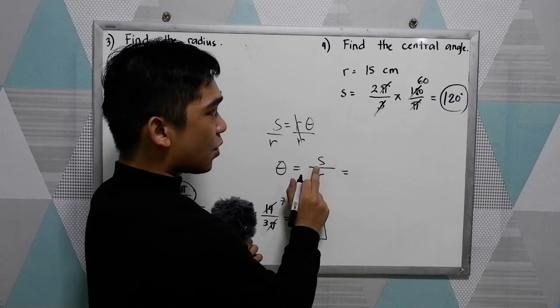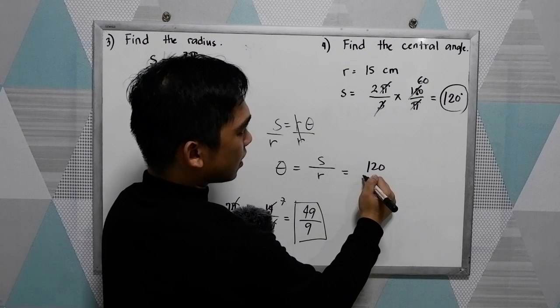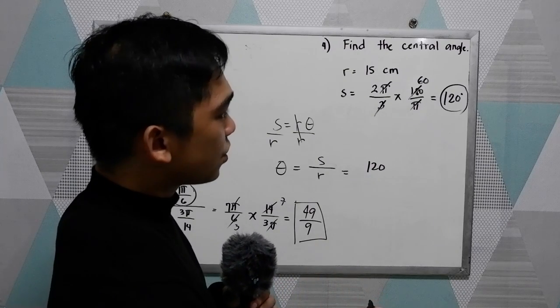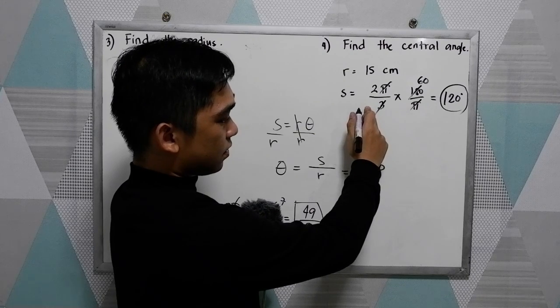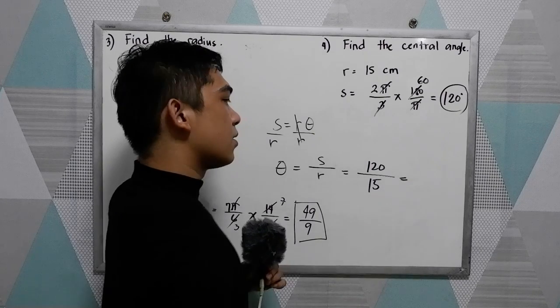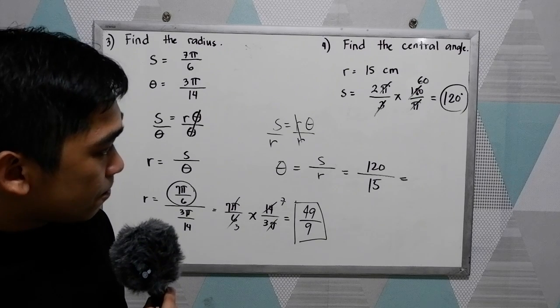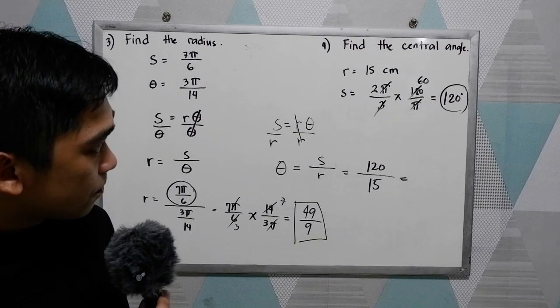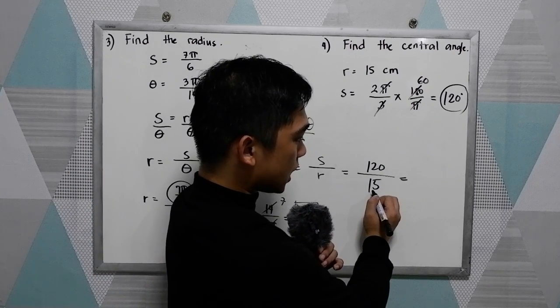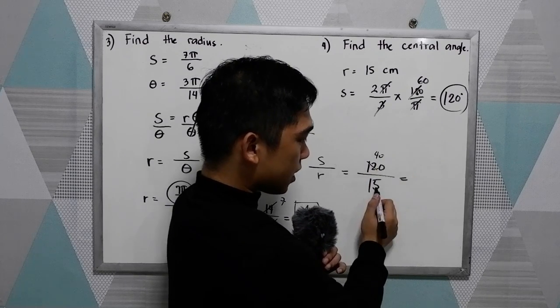Okay, now let us substitute in our formula. Our S is 120 degrees. We're going to use pi. Okay, 120 over 15, so that will give us 120 over 15 and reduce into lowest term divisible by 3 so we have 40 and 5.